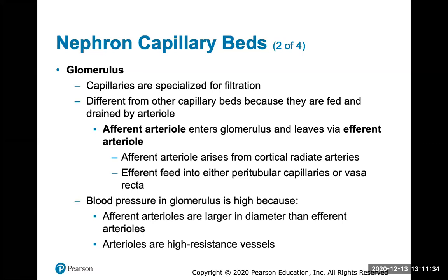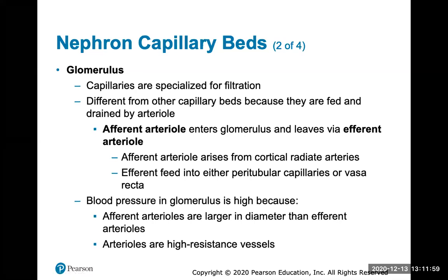The glomerulus capillaries are specialized for filtration. The afferent arteriole enters the glomerulus and blood leaves via the efferent arteriole. Blood pressure in the glomerulus is extremely high because the afferent arterioles, which bring in the blood, are larger in diameter, while the efferent arterioles are much smaller in diameter. This size difference creates a backup of pressure which allows for efficient filtration.